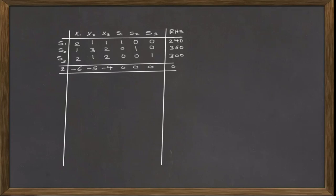In a maximization problem, we start by defining the decision variable that will enter the basis in the next table. This variable is the one with the most negative coefficient in the row of z. In this example, negative 6 is the most negative value in the row of z, so the column related to negative 6 is called the pivot column.